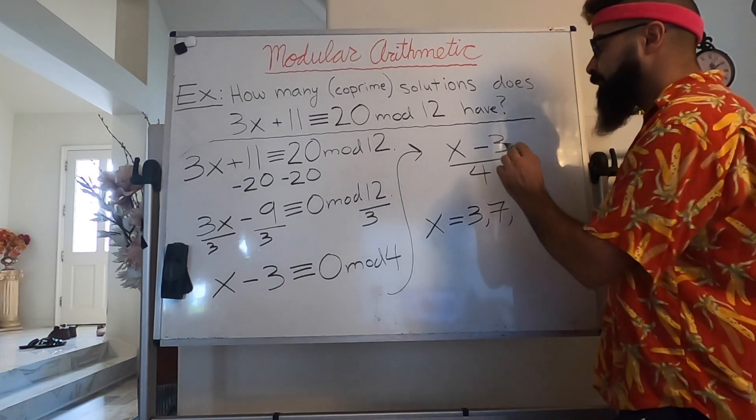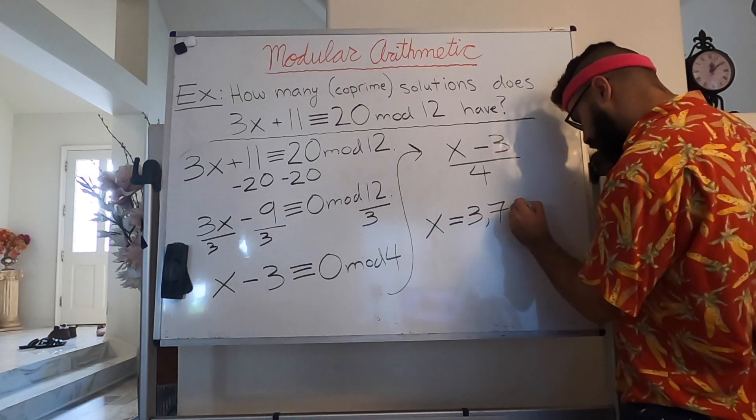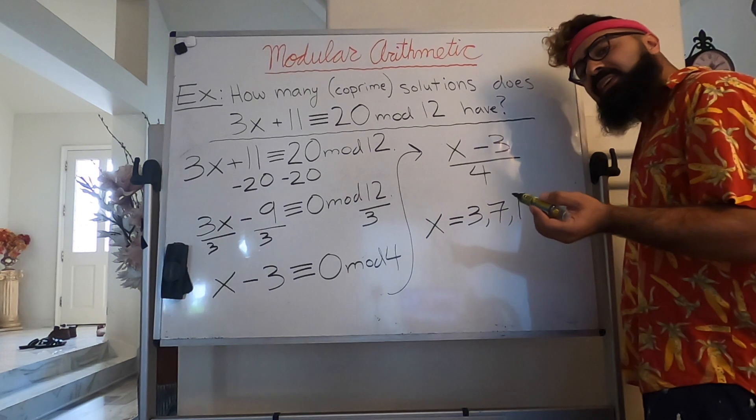Let's test the next one, 11. 11 minus 3 is 8, divided by 4 is 2, still an integer. So 11 works. If we go up another 4, we get 15.